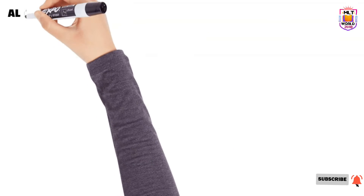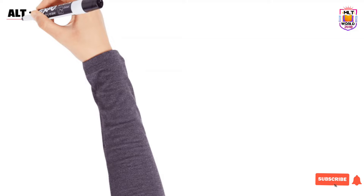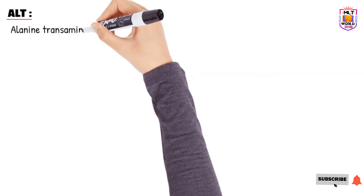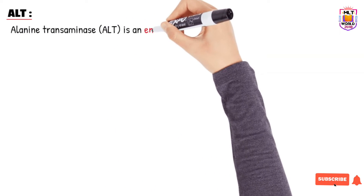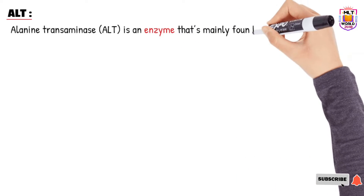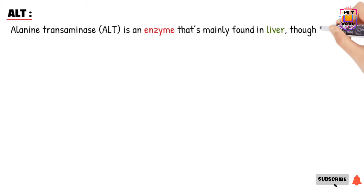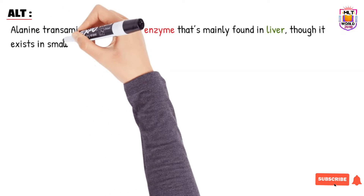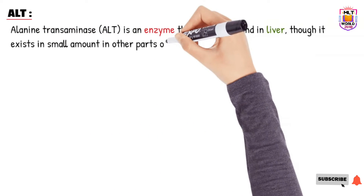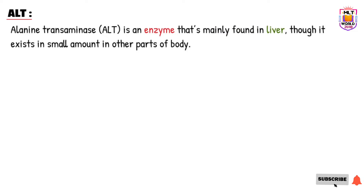With any of these names, a doctor can request this test. ALT is an enzyme made mainly in the liver, with very small amounts produced in other parts of the body. Basically, the main production of this enzyme is by the liver, so it is very helpful to check liver function.